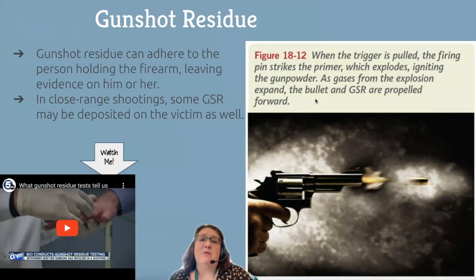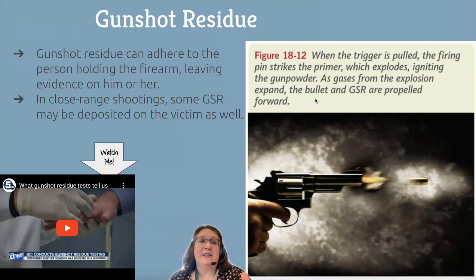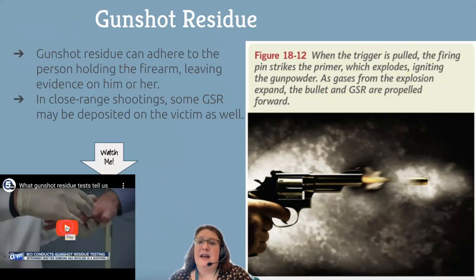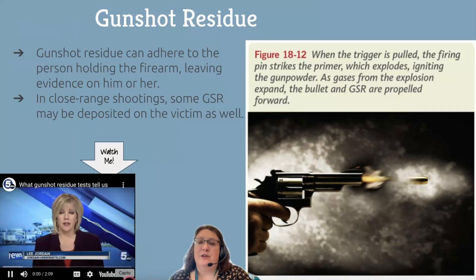In close-range shootings you may well get GSR on the victim as well as the person who fired the gun. The gases from the explosion are what propel all of these bits of metal and unburnt powder around. Now I'm going to show you what gunshot residue tests look like.